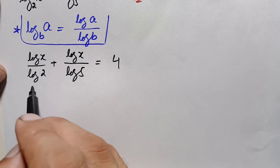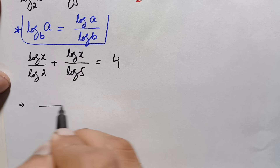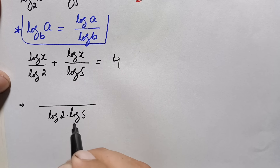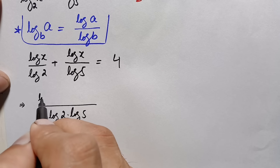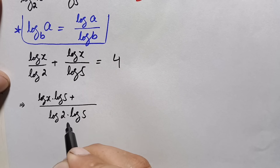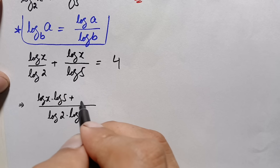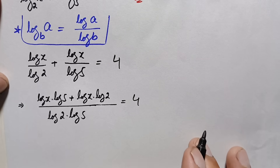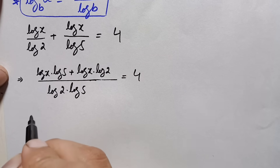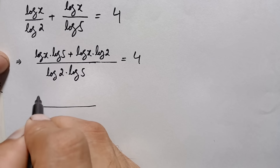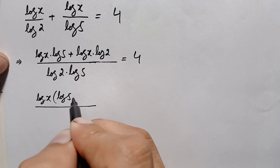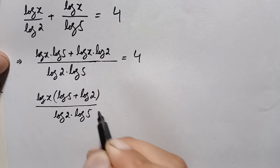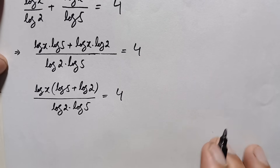Here we will take the LCM of the left hand side. The LCM of these two numbers is their product, so this will become log of 2 times log of 5. Dividing by log of 2 gives log of 5, so we multiply log of 5 with the first term to get log of x times log of 5. Dividing by log of 5 gives log of 2, so we multiply log of 2 with the second term to get log of x times log of 2. Taking log of x common from the numerator gives: log of x times (log of 5 plus log of 2), divided by log of 2 times log of 5, is equal to 4.